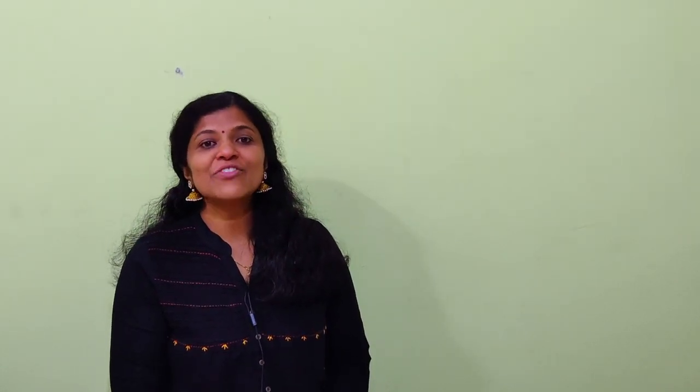For the remaining ratios, we know that cot is the reciprocal of tan, sec is the reciprocal of cosine, and cosec is the reciprocal of sine.